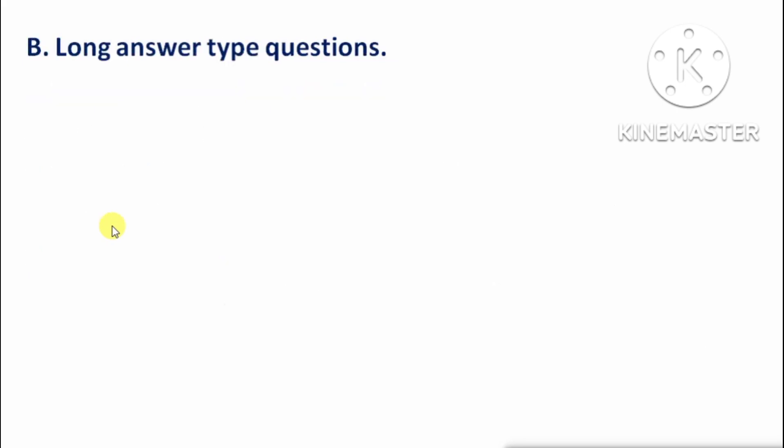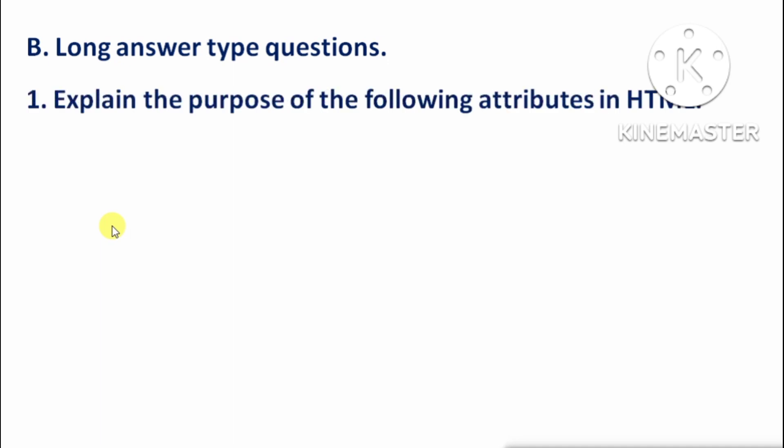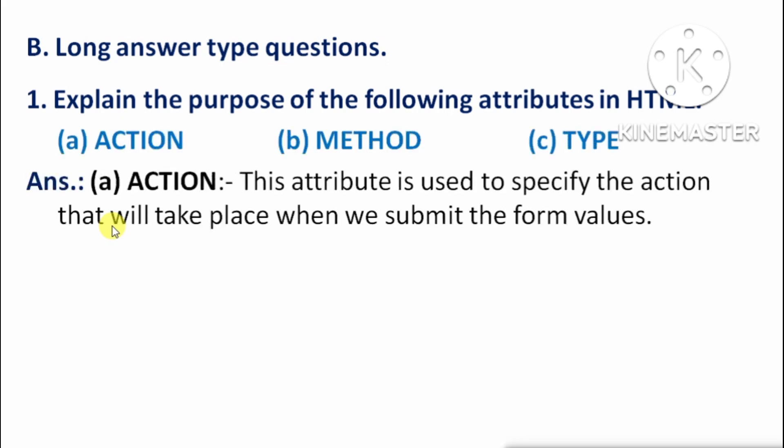Long answer type questions. First question: Explain the purpose of the following attributes in HTML. First is 'action': This attribute is used to specify the action that will take place when we submit the form values — yeh specify karta hai ki kaunsa action hoga jab hum form value ko submit karenge.